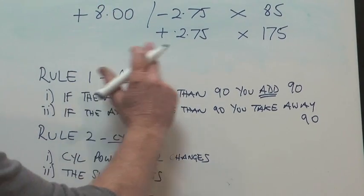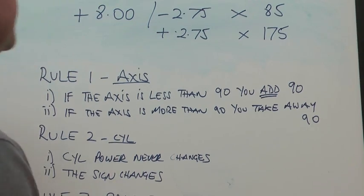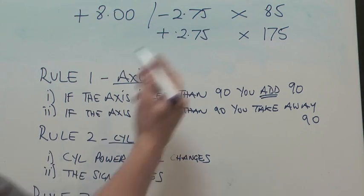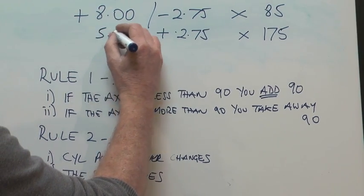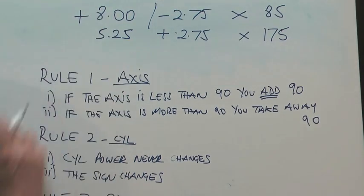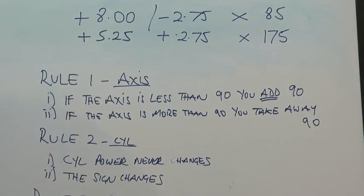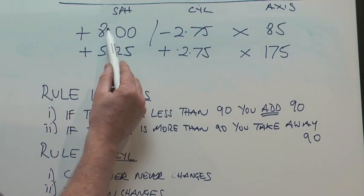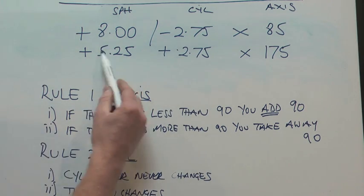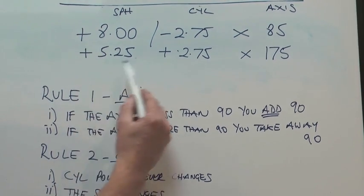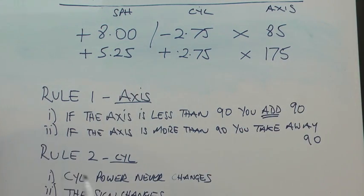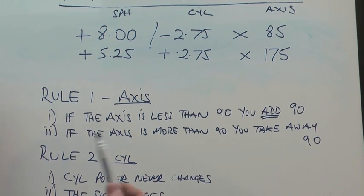Now in this case, we have a plus 8 and a minus 2.75. So we have to take the lower number from the bigger number. So that will give us a 5.25. And then the sign will always correspond to the sign of the bigger number. So that becomes a plus. Can you see here that that one plus that equals that? 5.25 plus 2.75 equals 8. So you can always double check to see that you've got the right math. So this prescription can be written either minus cylinder form or plus cylinder form. But these simple rules will apply whenever you do transposition.